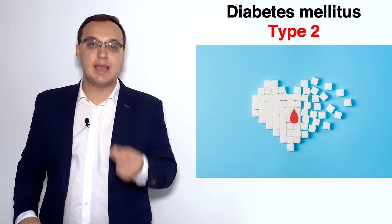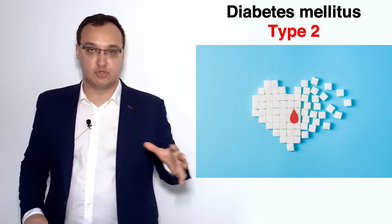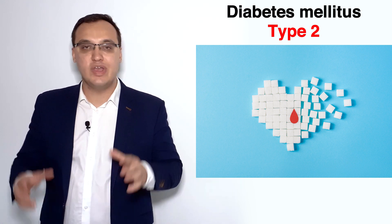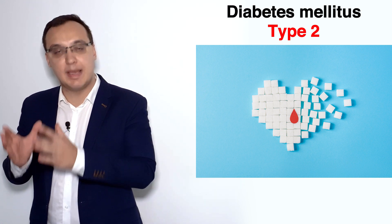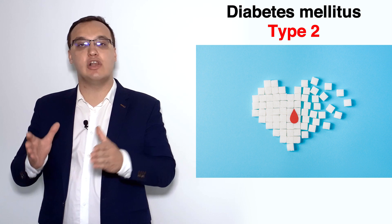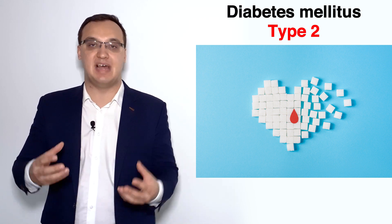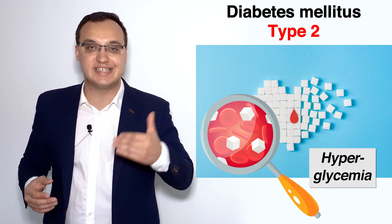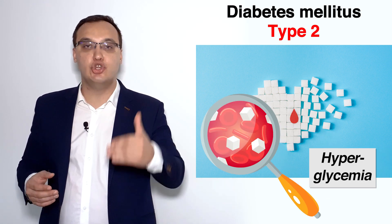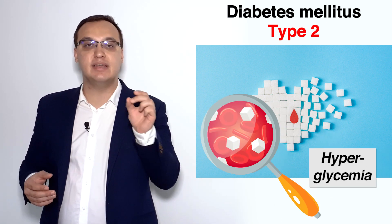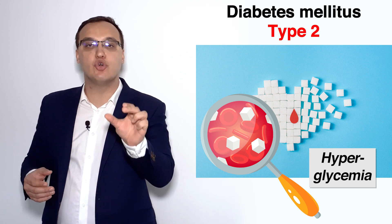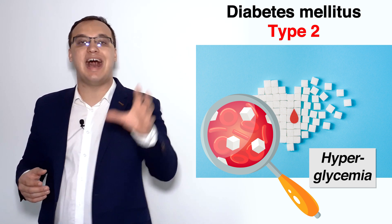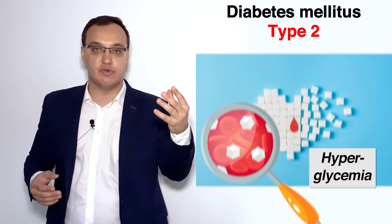Today we look at diabetes mellitus and the symptoms of it. In diabetes mellitus we have a lot of sugar in the blood — we call it hyperglycemia. Glucemia means glucose in the blood, and hyper means a lot of.